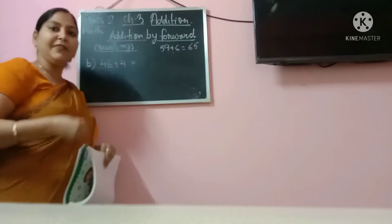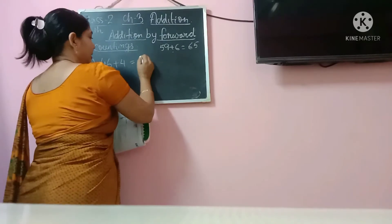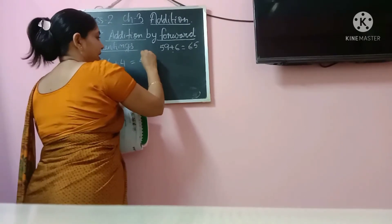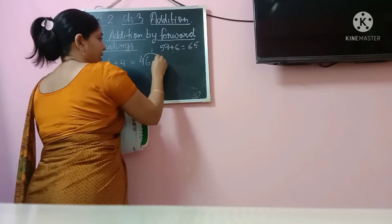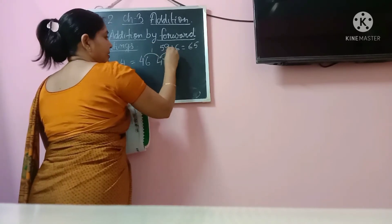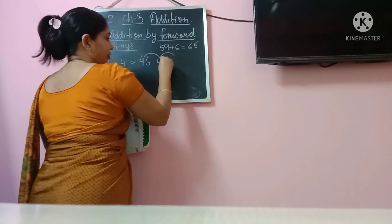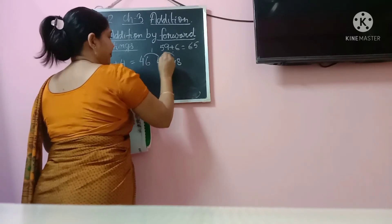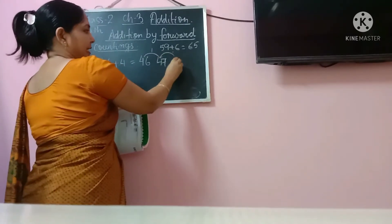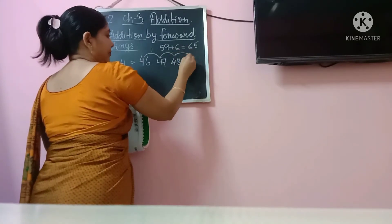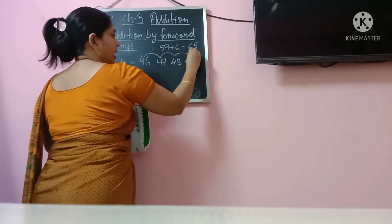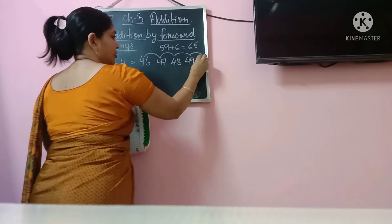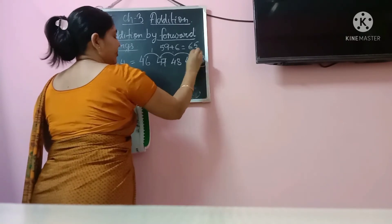So by forward counting, how will you do? We will start with 46 and then move 4 steps. First step: 47. Second step: 48. Third step: 49. And fourth step is 50. So your final answer is 50.